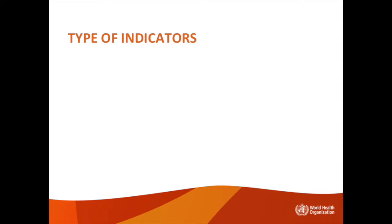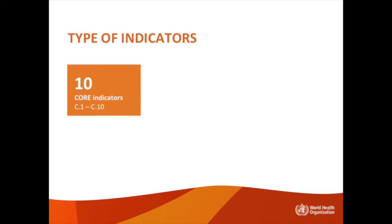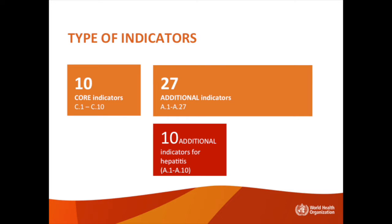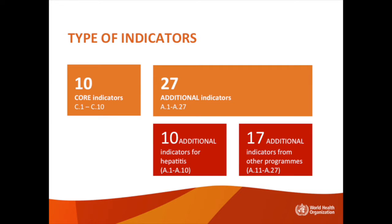It is a result chain similar to HIV. It facilitates the collection and analysis of standardized data. We've been trying to find a balance between remaining parsimonious and obtaining the minimum information required. The Monitoring and Evaluation Framework is made of indicators. 10 core indicators have been numbered between C1 and C10. 27 additional indicators have been numbered between A1 and A27. The 10 first additional indicators from A1 to A10 are specific to viral hepatitis, while 17 additional indicators have been recycled from other programs, numbered between A11 and A27.